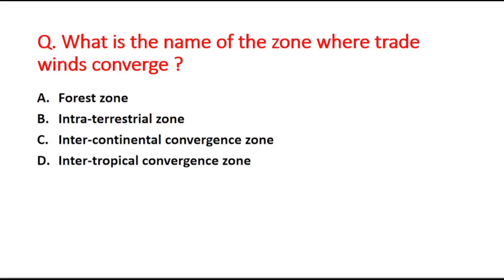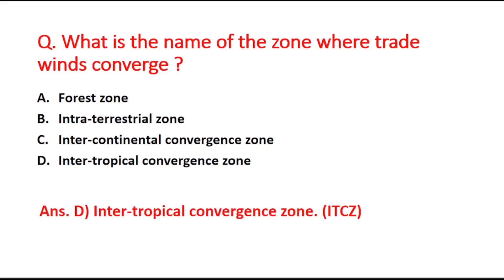First question: What is the name of the zone where trade winds converge? Option A is forest zone, B is intra-terrestrial zone, C is intercontinental convergence zone, and D is intertropical convergence zone. The right answer is option D, that is intertropical convergence zone.